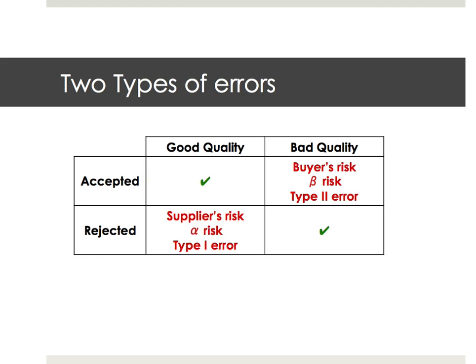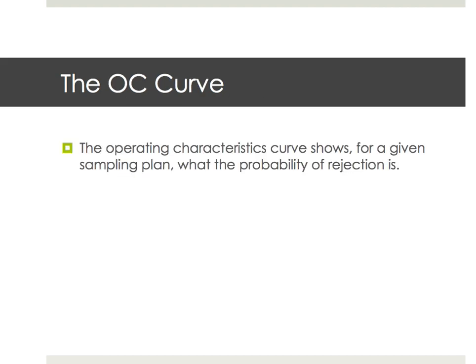So a good sampling plan tries to reduce the proportion of these errors and tries to make sure that in most cases we're in the correct outcome. I want to introduce the OC curves — operating characteristics curves — that show what the probability of rejection is.